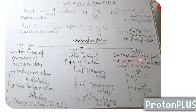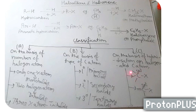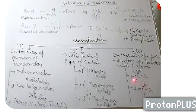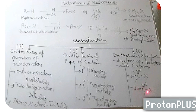Think if a quaternary halide is possible or not. On the basis of hybridization of the halogenated carbon atom: if the halogenated carbon atom is sp3 — if all the bonds are single, saturated — then it is an sp3 hybridized carbon atom. Secondly, if one pi bond or double bond is there, then it is an sp2 hybridized carbon atom. The second classification is sp2 hybridized halogenated carbon atom.